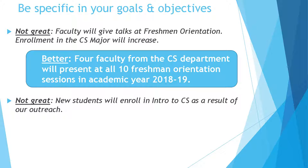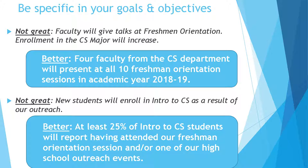Here's another example. A vague goal: new students will enroll in intro to CS as a result of our outreach. That may be exactly what you hoped would happen, but here's a better way to talk about it that makes it more measurable: at least 25% of Introduction to CS students will report having attended our freshman orientation session and/or one of our high school outreach events. So the more specific you are, the more measurable it becomes.